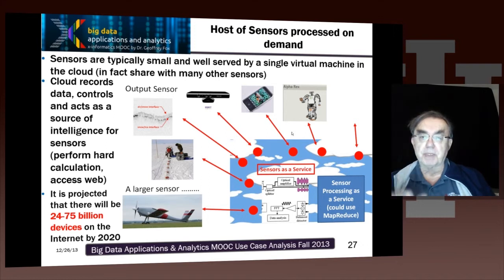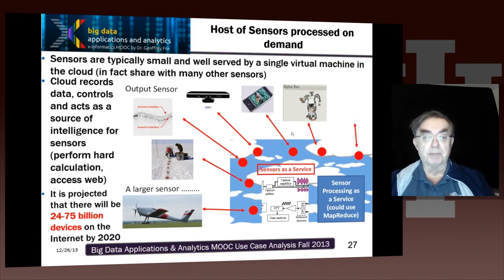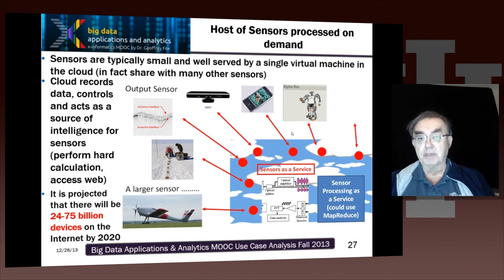This model underlies robotics and also explains the smartphone revolution. That's why smartphones are smart — because of the cloud, and because you have this model of cloud-controlled things.